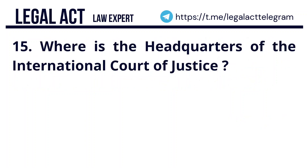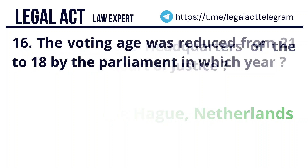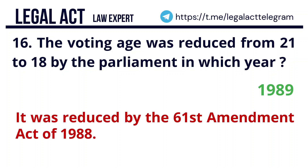Question 15: Where is the Headquarters of the International Court of Justice? The answer is The Hague, Netherlands. Question 16: The voting age was reduced from 21 to 18 by the Parliament in which year? The answer is 1989. It was reduced by the 61st Amendment Act of 1988.